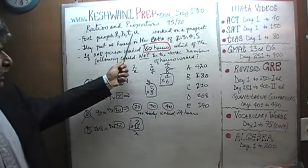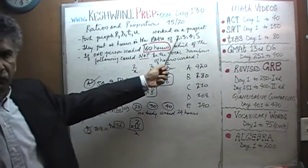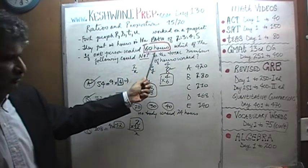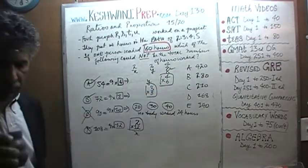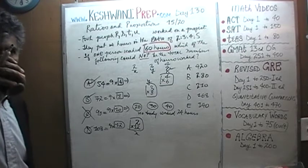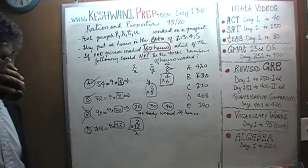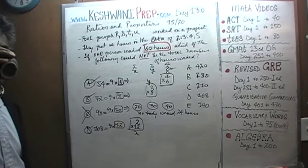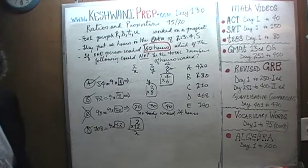One more time: 4 people R, S, T and U worked on a project in the ratio of 2 to 3 to 4 to 5. One person worked 60 hours. Which of the following could not be the total number of hours worked? Alright, here we go.